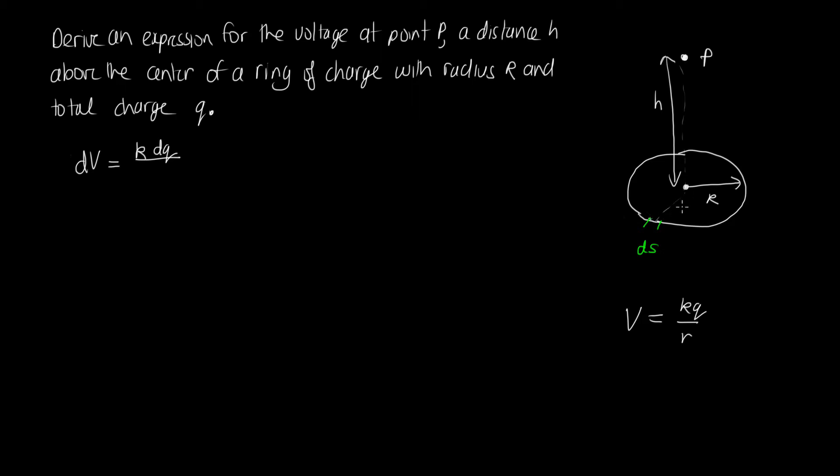So I hope you can see this is a right angle triangle. We've got the length R here, the radius of the circle, and then the height h. So we can work out this distance using r² + h².